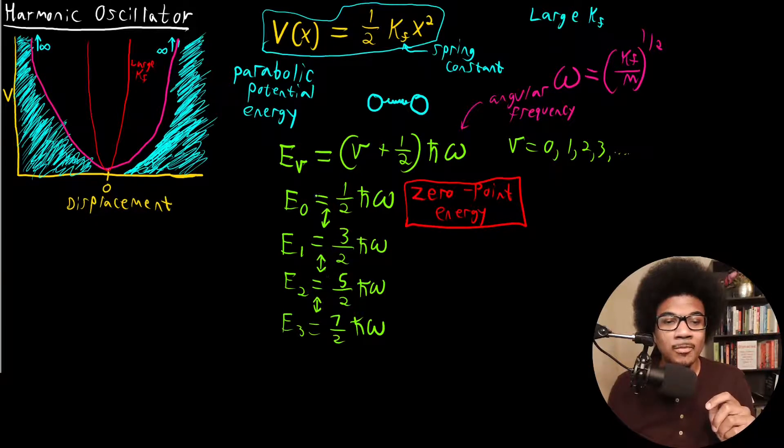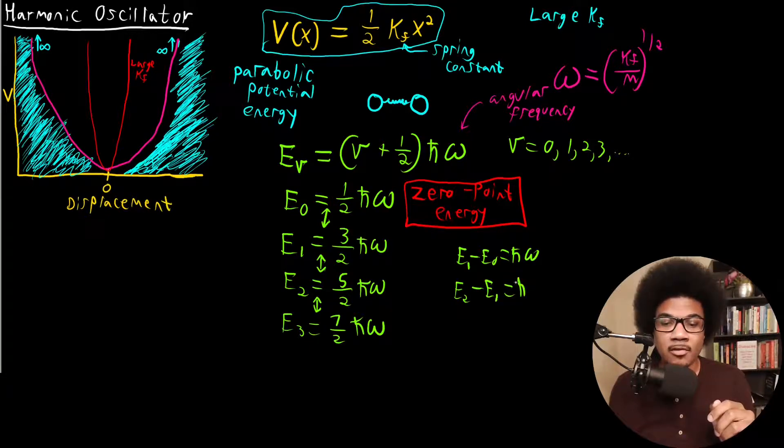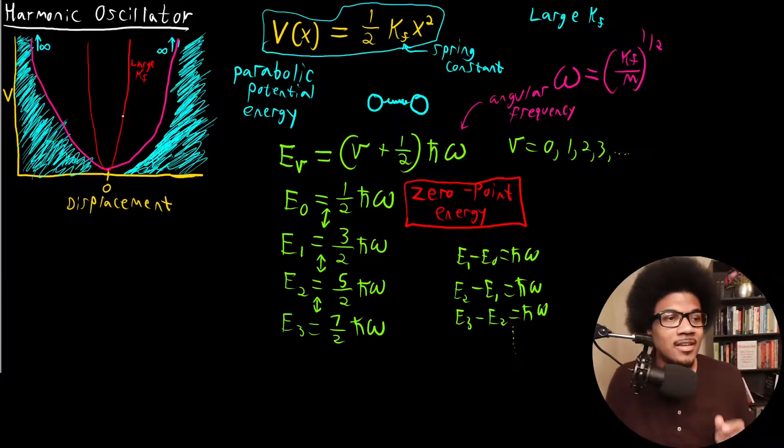What the trend that I'm trying to show here is that the spacing between levels is exactly the same. If you subtract E₁ minus E₀, you get ℏω. If you subtract E₂ from E₁, you get ℏω. If you subtract E₃ from E₂, you also get ℏω. So on and so forth. All of the adjacent energy levels have the exact same energy.